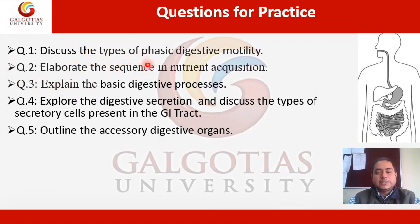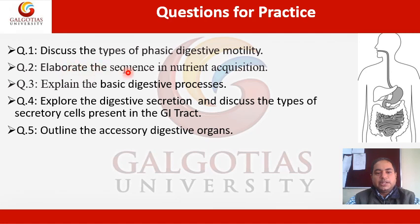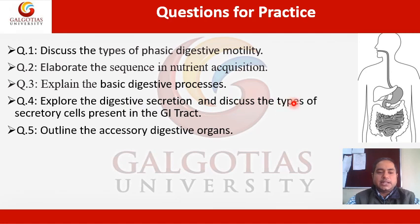This is the question-and-answer session. Homework questions include: discuss the types of phasic digestive motility; elaborate the sequence in nutrient acquisition; explain the basic digestive processes; explore the digestive secretions and discuss the types of secretory cells present in the GI tract; and outline the accessory digestive organs.